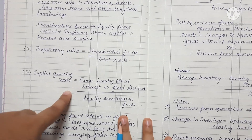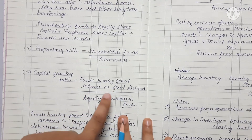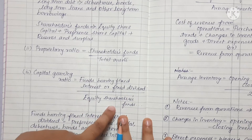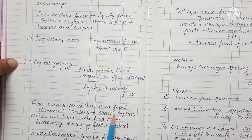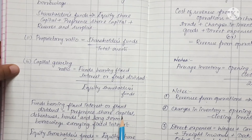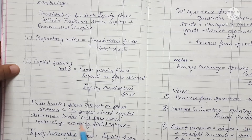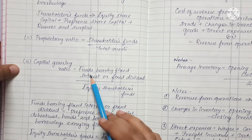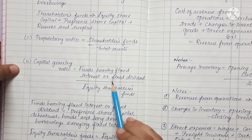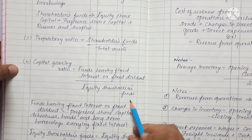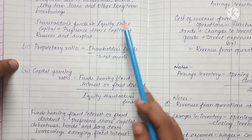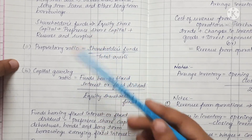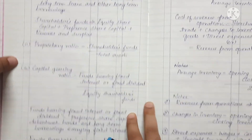The third is Capital Gearing Ratio, which is Fixed Interest or Fixed Dividend Bearing Funds divided by Equity Shareholders Fund. Fixed bearing funds include preference shares and debentures, while Equity Shareholders Fund equals Equity Share Capital plus Reserves and Surplus.